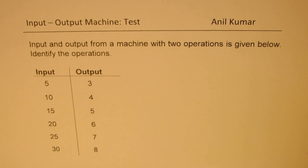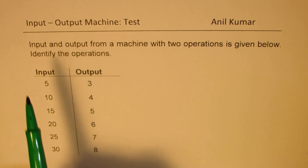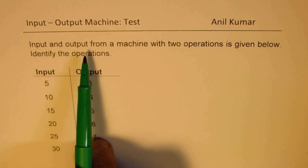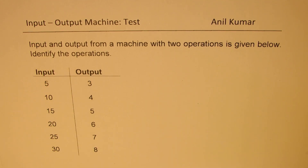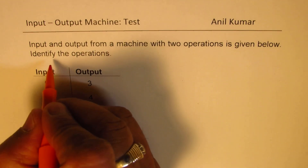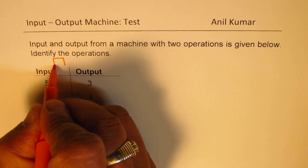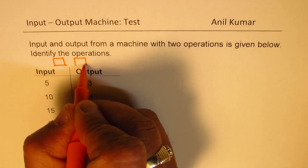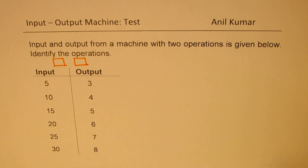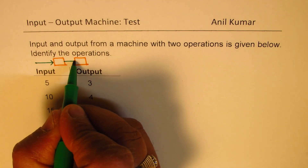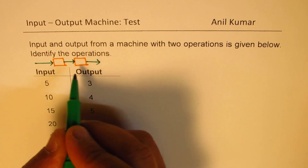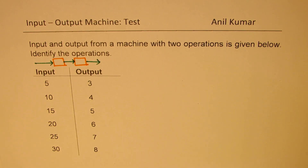This is the third question, which is the final one, and we'll begin our work from here. Input and output from a machine with two operations is given below — identify the operations. We need to identify what is happening: first what happens, then what happens, so the result is as shown. The process is clear, but figuring it out is a bit tricky.